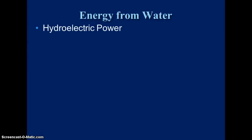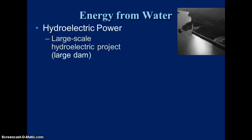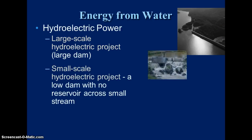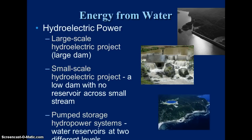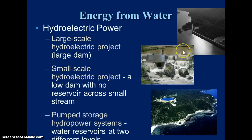Our second example of renewable energy is energy from water — hydroelectric power. We have both large-scale and small-scale projects. A large-scale project is a dam built on a river where water is stored and released as needed to turn turbines. A small-scale project is built on a river or stream without a dam; water always flows through and turns a turbine, though it doesn't generate as much power.